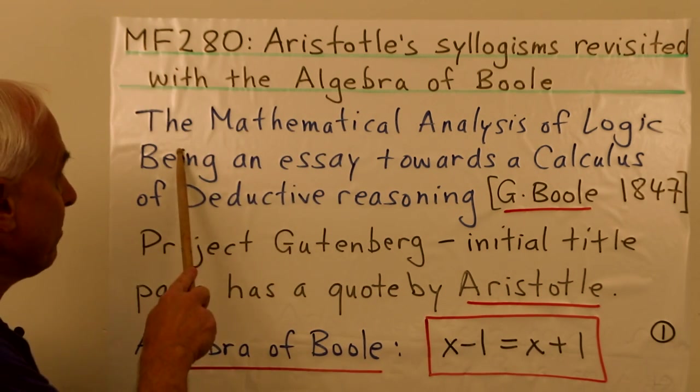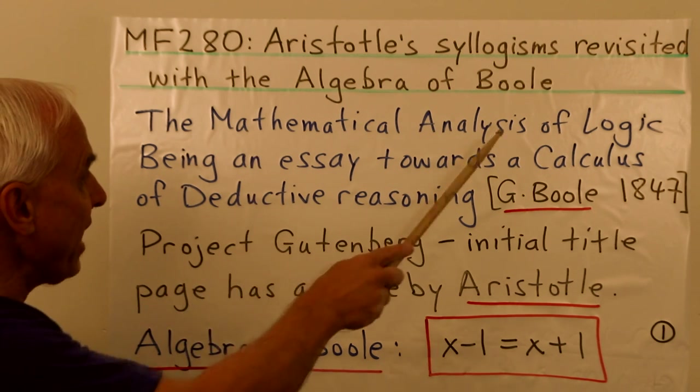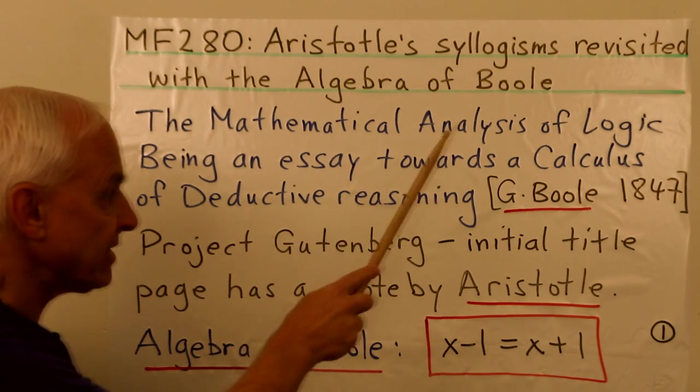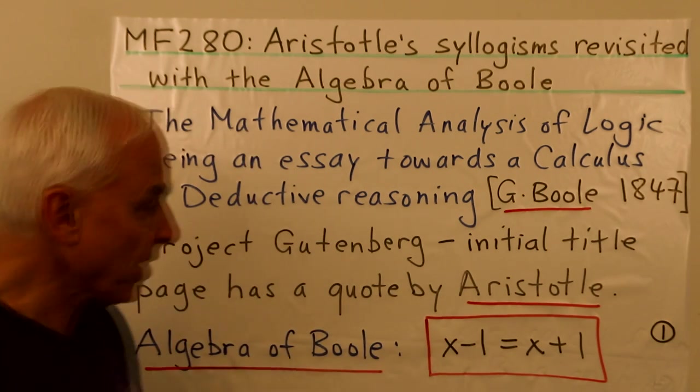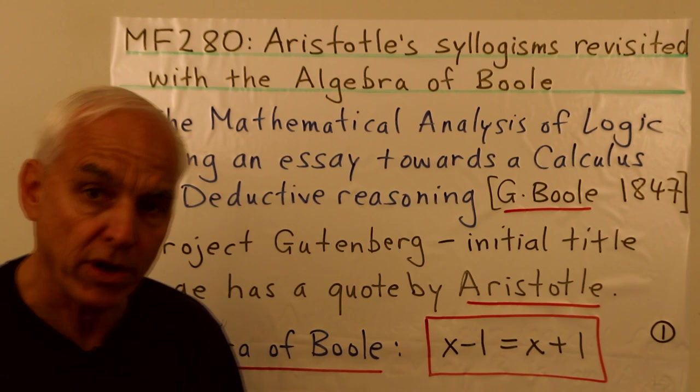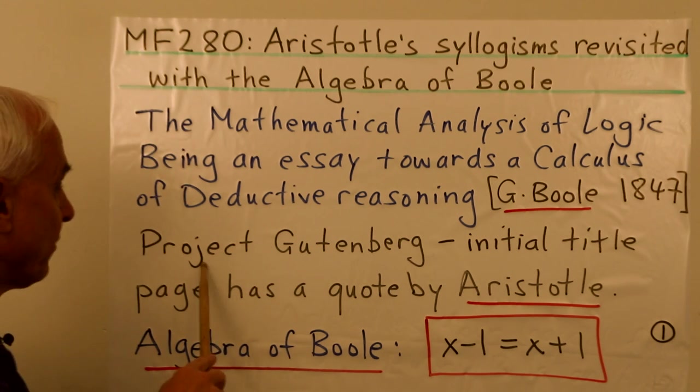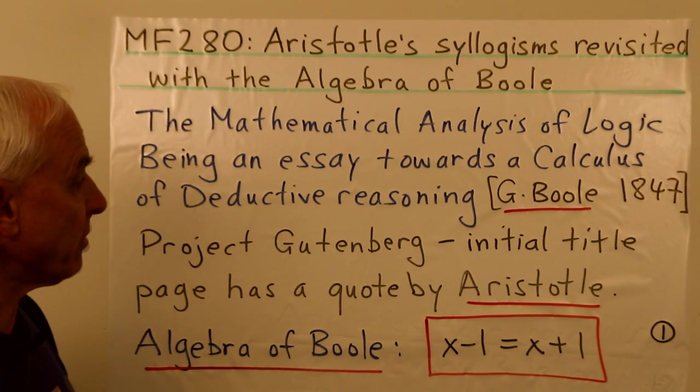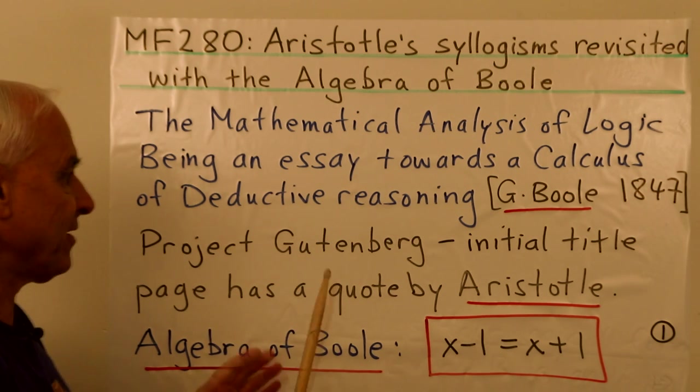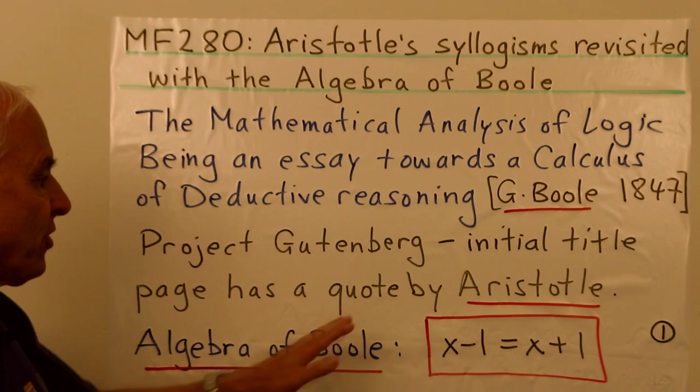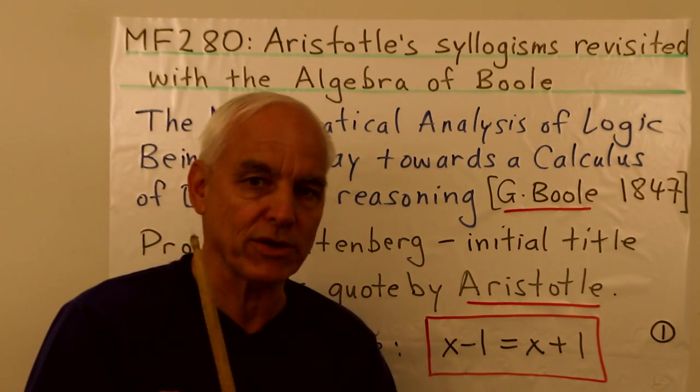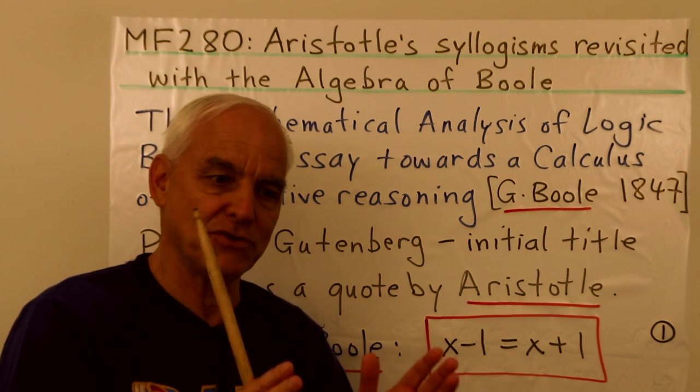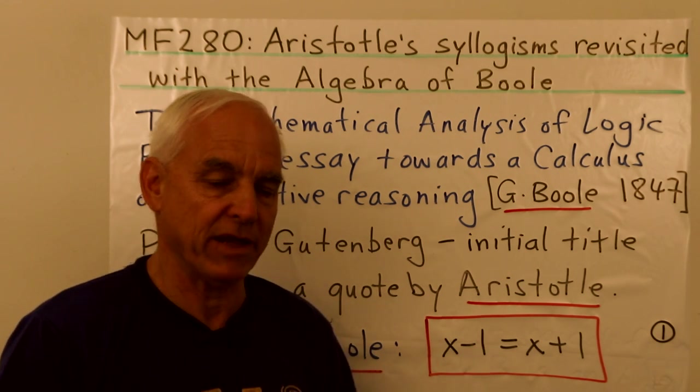So in the book The Mathematical Analysis of Logic Being an Essay Towards a Calculus of Deductive Reasoning that he wrote in 1847, you can actually find this work on the internet with Project Gutenberg. And if you have a look at it, you will see that in Greek at the very front of the initial title page, there's actually a quote by Aristotle. So that emphasizes the importance that Boole gave to this classical application of his work.